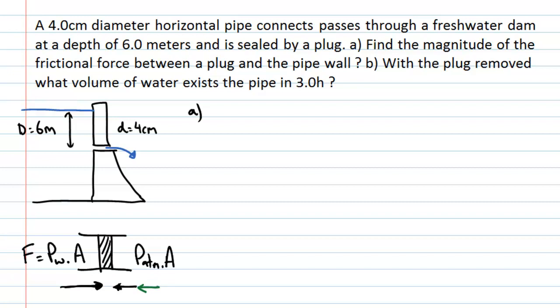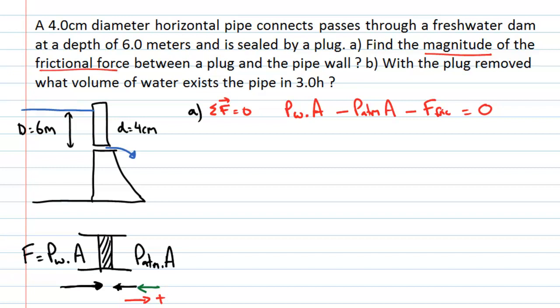Taking rightward as positive, Newton's second law gives: the force from the water (pressure of water times area) minus the force from air (pressure of atmosphere times area) minus the frictional force equals zero. The frictional force is therefore equal to the pressure of the water minus the pressure of atmosphere, multiplied by the area.